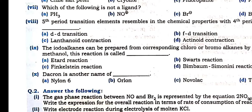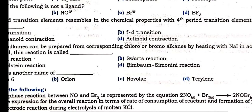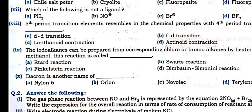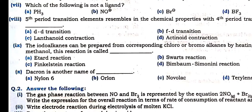Fifth period transition elements resemble in chemical properties with fourth period transition elements due to lanthanide contraction. The size reduces and it assembles the same properties as inside the D-block element. That is why F-block elements are inside the D-block element.